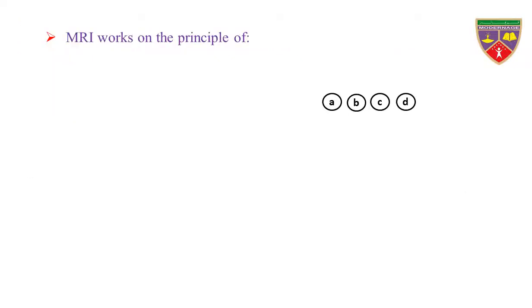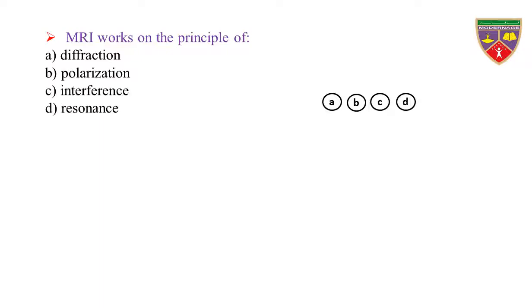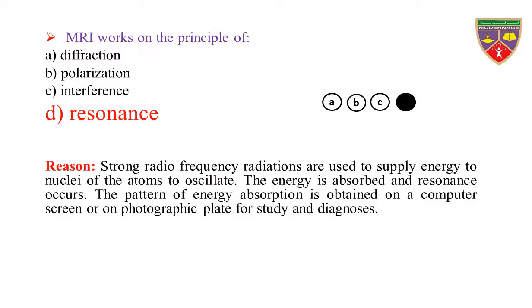MRI works on the principle of: Option A: diffraction. Option B: polarization. Option C: interference. Option D: resonance. The key is resonance. Therefore, the correct option is D.